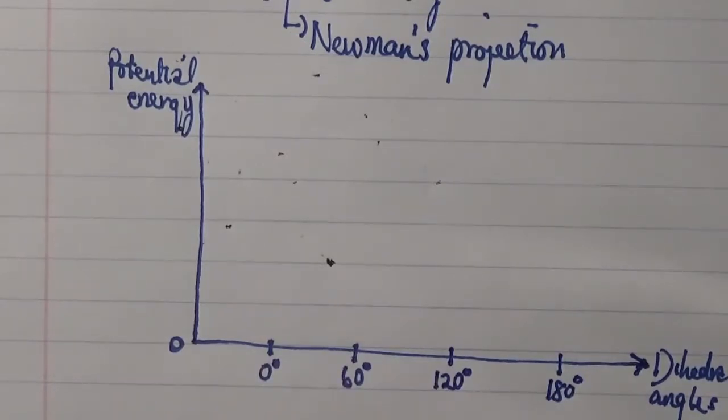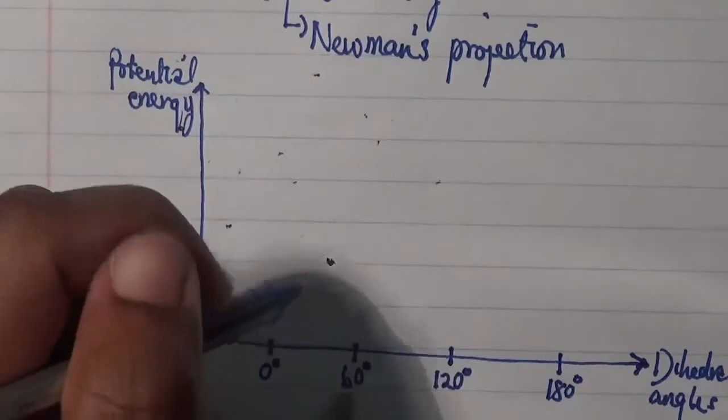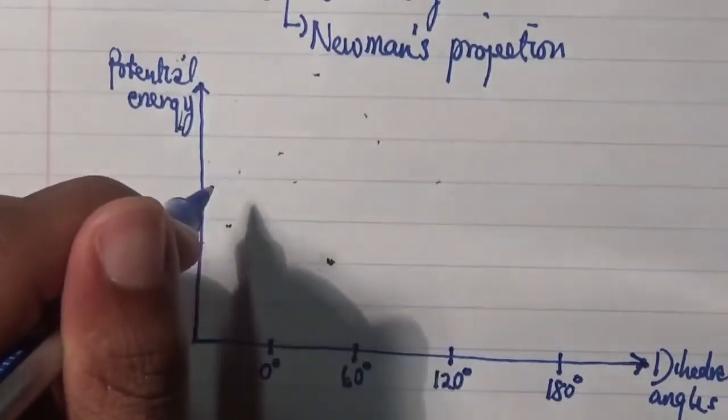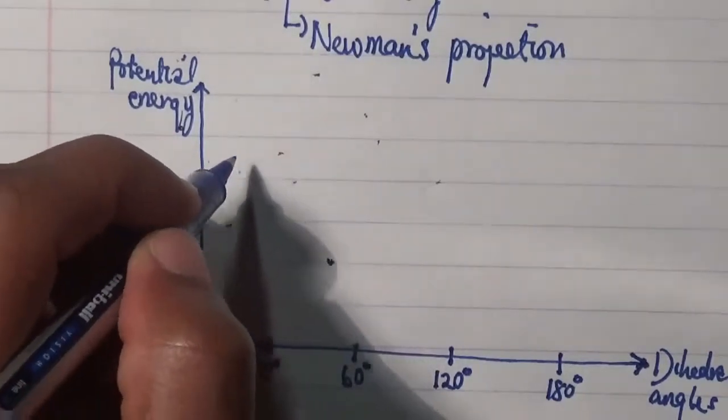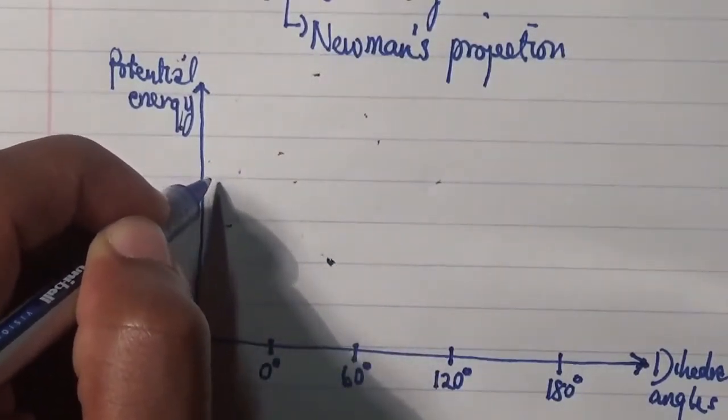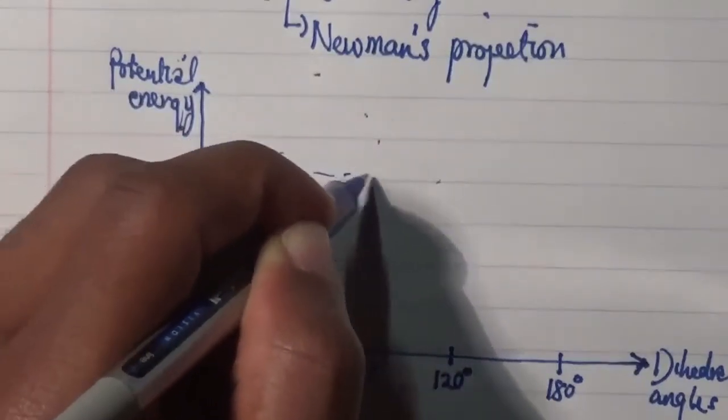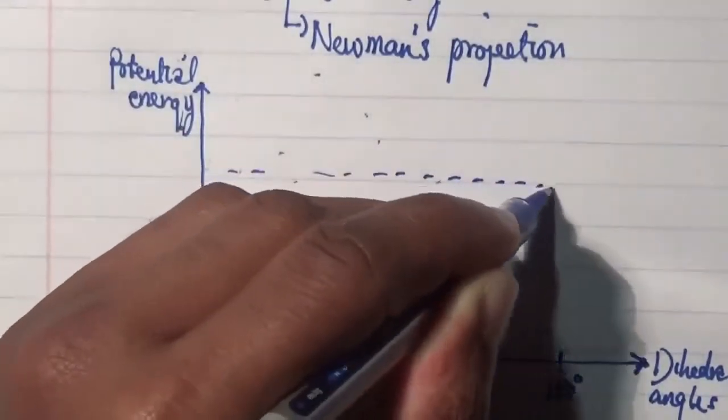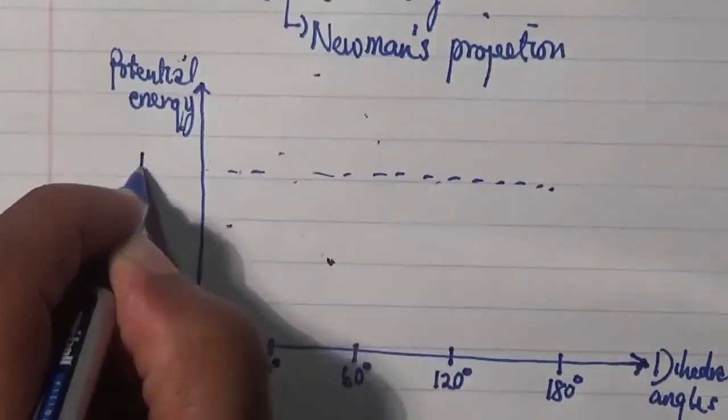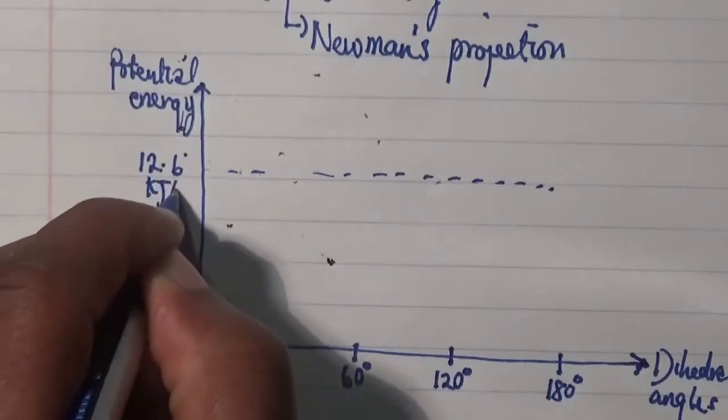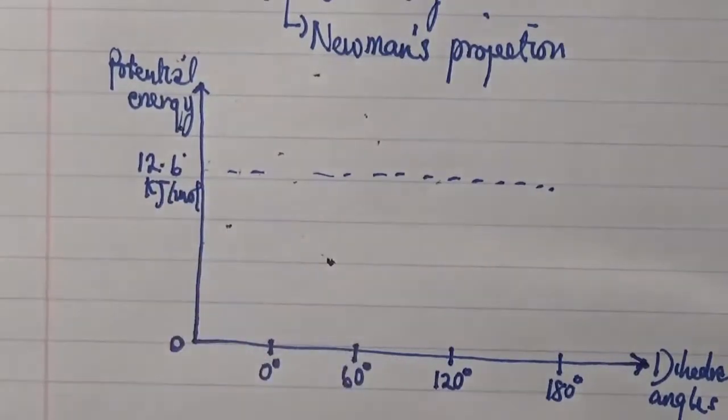You may recall that the energy required for me to go from the staggered to the eclipsed is 12.6 kilojoules per mole. So in here, I'm going to make my reference here where the energy here will be 12.6 kilojoules per mole.